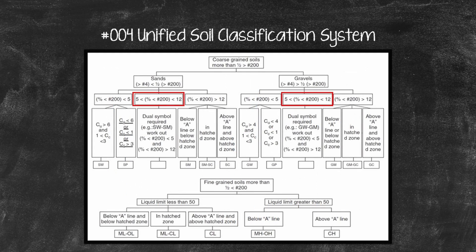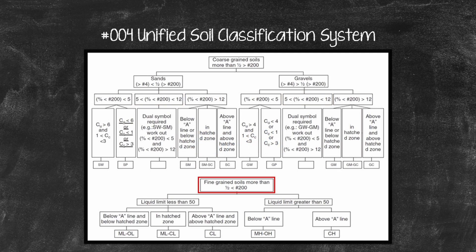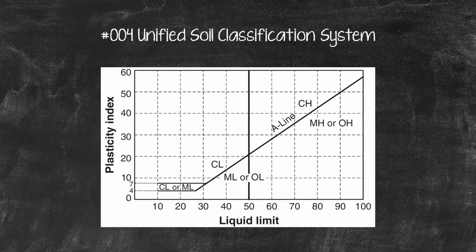If the percent passing No. 200 is between 5% and 12%, a dual symbol is required, as the soil is intermediate between clean and dirty. The classification for both the less-than-5% case and the more-than-12% case are obtained, and the soil ends up with a dual symbol — for example, GP-GC or SW-SM. For fine-grained soils, the plasticity index and the liquid limit are plotted on the plasticity chart, and the classification symbol is read from the quadrant of the chart where the point is situated.